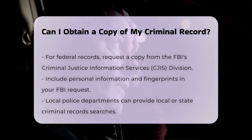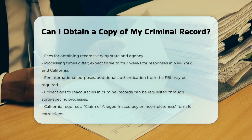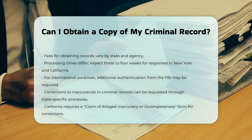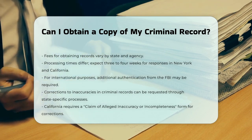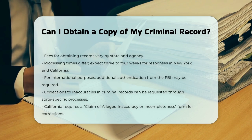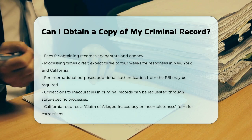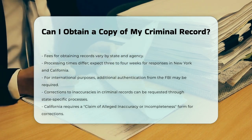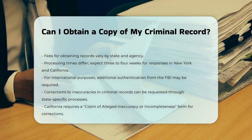For international purposes, if you need your criminal record for international purposes such as for work, school, or adoption, you may need additional authentication. The FBI can authenticate the results for international requests by placing the FBI seal and signature of a division official on the results. You may also need to obtain an apostille from the U.S. Department of State.